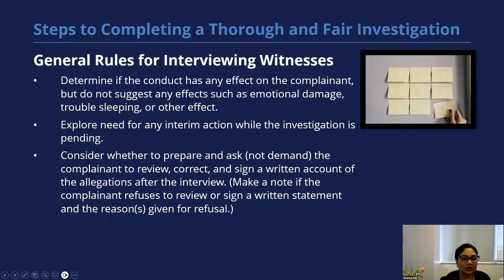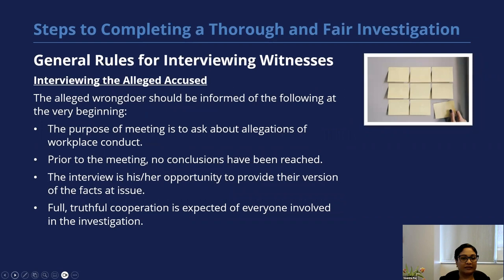Determine and record the limits of any of the complainant's cooperativeness. Determine the complainant's reason for any delay. Consider asking what the complainant would like to see done to ensure the problem does not reoccur. Determine if the conduct has had any effect on the complainant, but do not suggest any effects such as emotional damage, trouble sleeping, or any other effect — be very mindful not to suggest effects. Explore the need for any interim action while the investigation is pending, and consider whether to ask — but do not demand — the complainant to review, correct, and sign a written account of the allegations. If the complainant refuses to sign, note why they refuse.